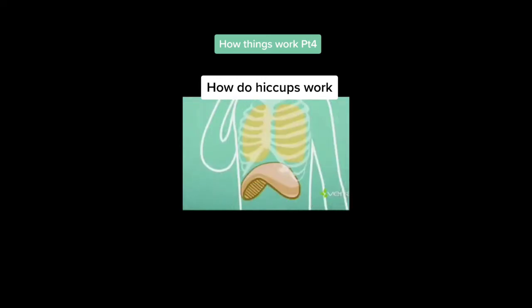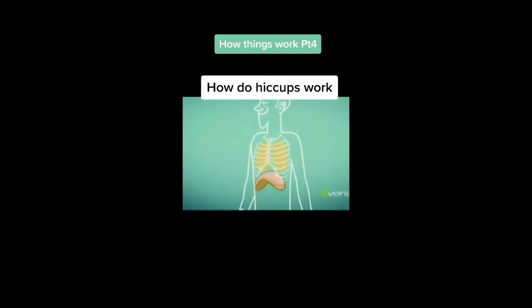Your diaphragm, the dome-shaped muscle at the bottom of your chest, is where all hiccups start. The diaphragm almost always works perfectly. When you inhale, it pulls down to help pull air into your lungs. When you exhale, it pushes up to help push air out of the lungs.